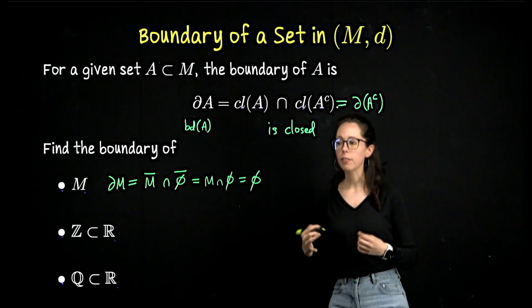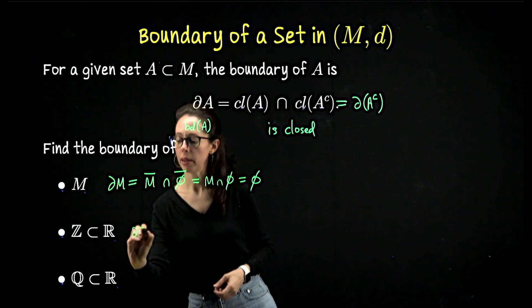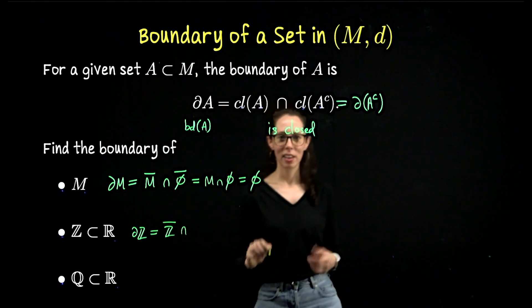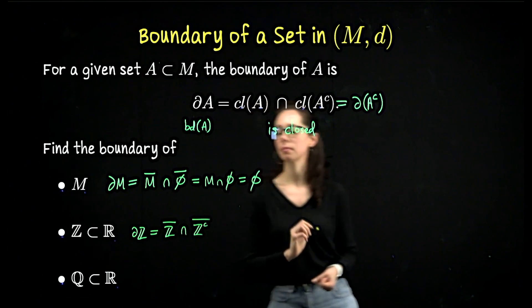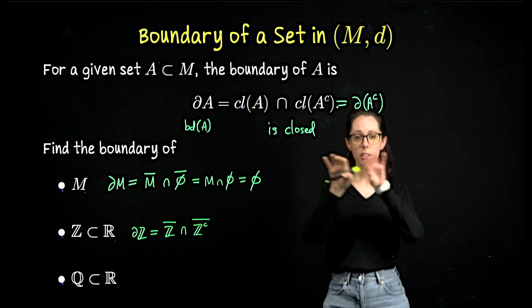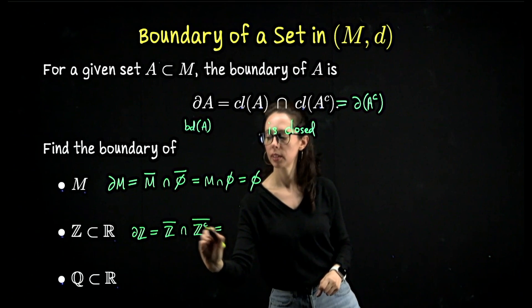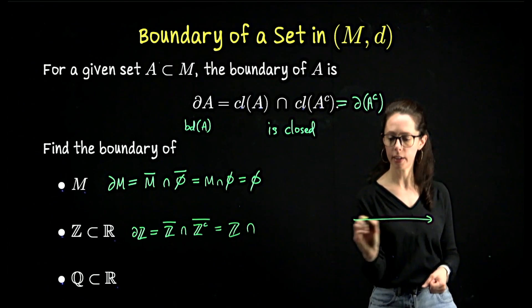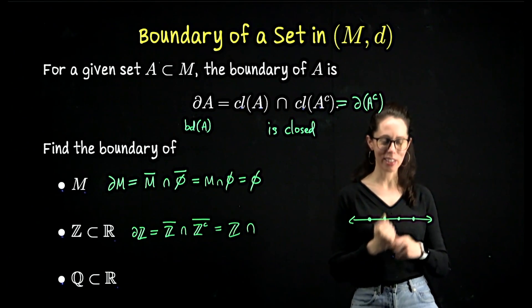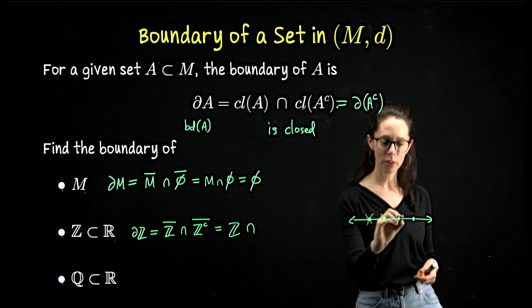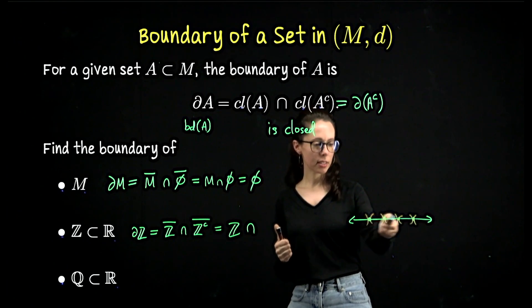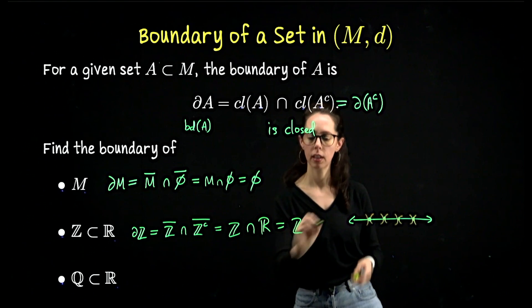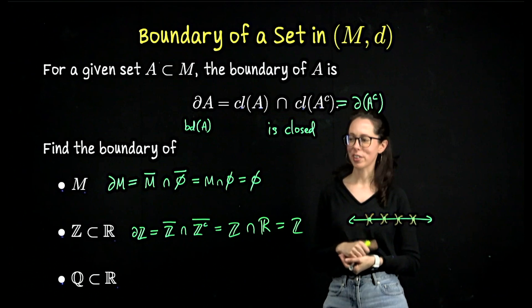What about the boundary of the set of integers as a subset of the Euclidean real number line? The boundary of the integers is the closure of the integers intersect the closure of the integers complement. If you imagine the integers and take the complement, it's a bunch of little open intervals separated by the integers. The integers are already closed. Each integer is an accumulation point for the complement, so closing off the complement means taking the whole real number line. So integers are their own boundary — the set of boundary points for the integers is the integers.